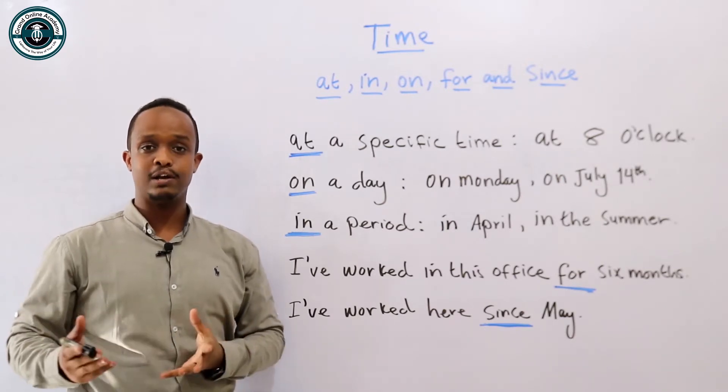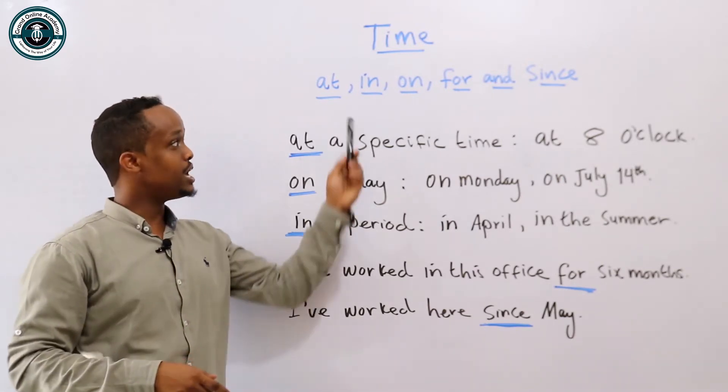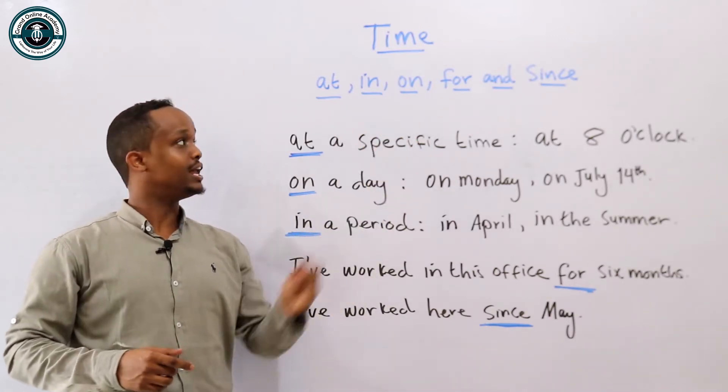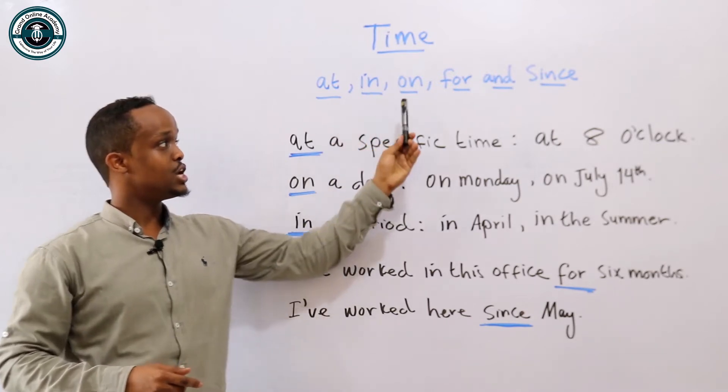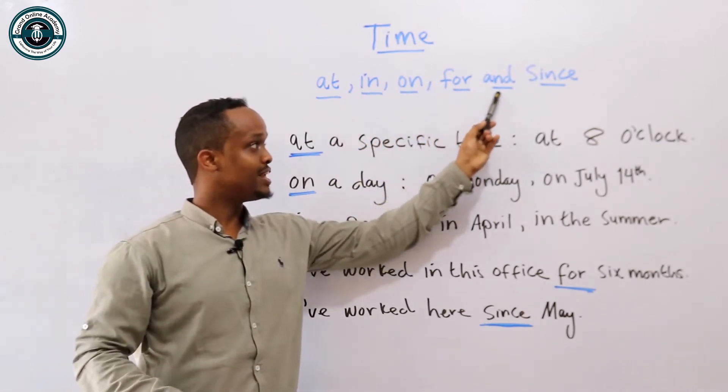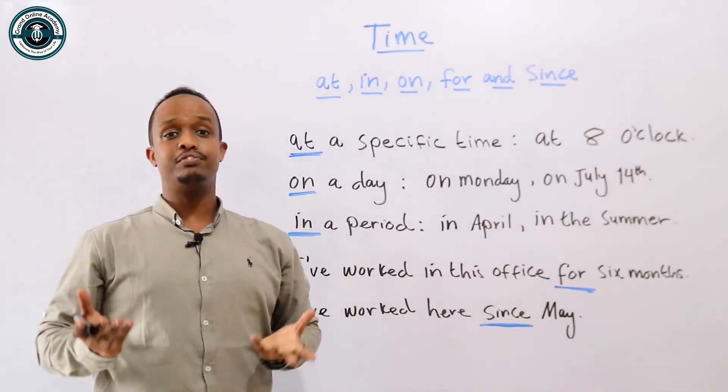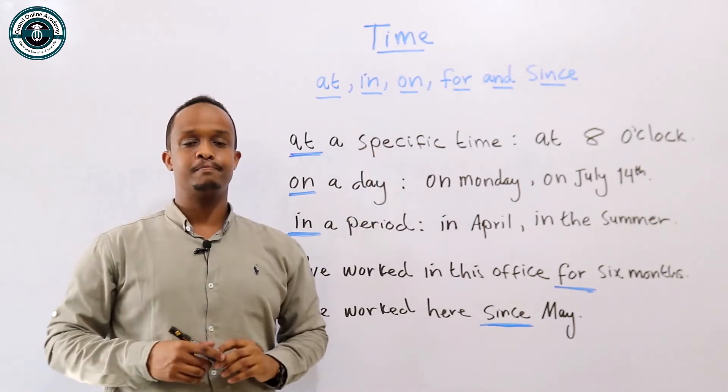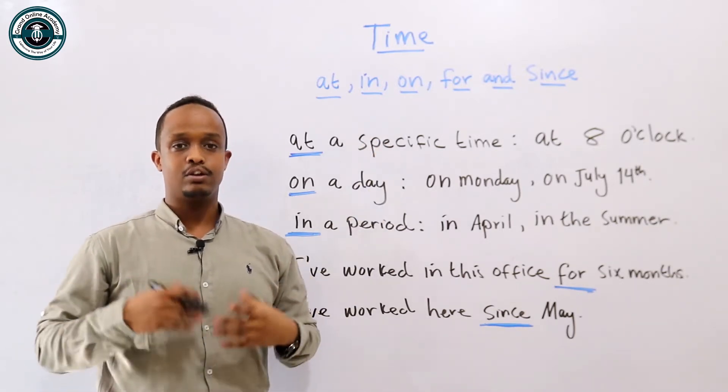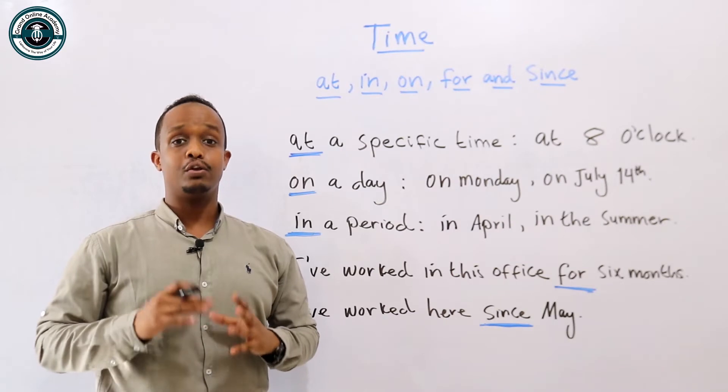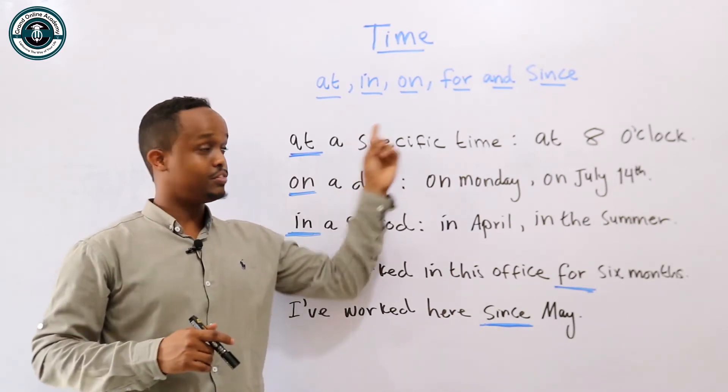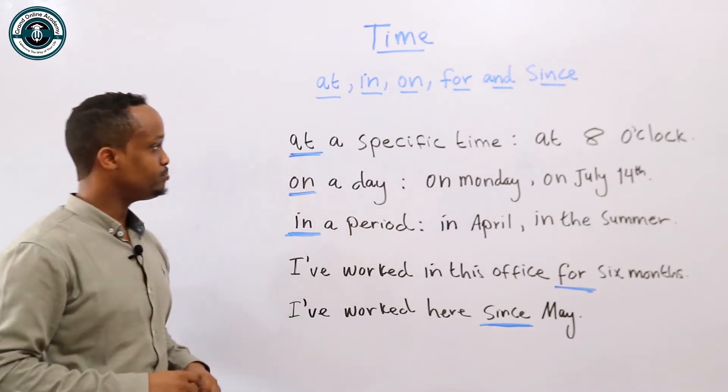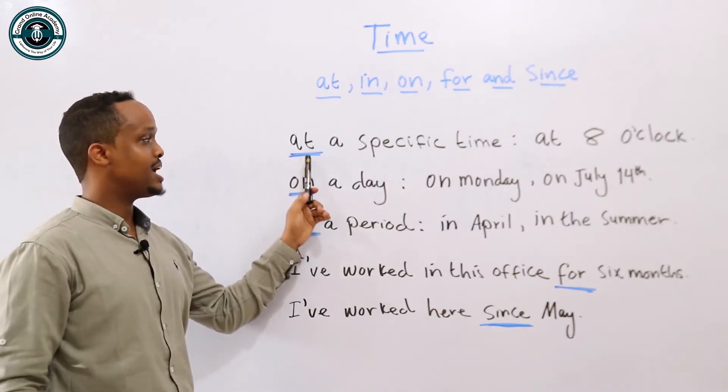We can talk about time in many different ways, but today we'll be focusing on these prepositions: in, on, for, and since. They are very confusing if you don't know how to use them. It's very common that you'll need these prepositions to talk about time at one point in your life. So let's start with at.